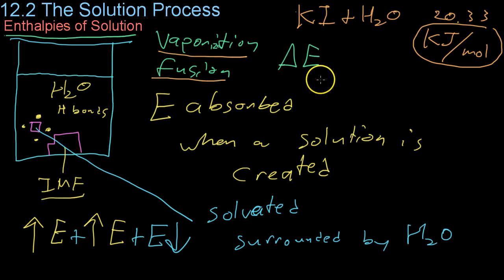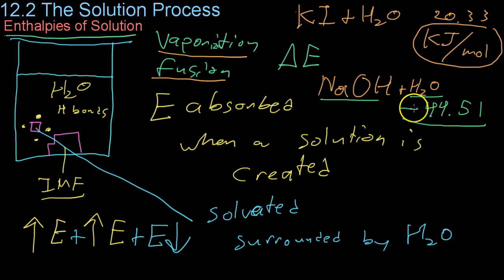However, if for example you were to put sodium hydroxide into a solution of water, you would get a negative enthalpy of solution, that is negative 44.51. And this is because they release energy rather than absorb it when they are combined. And this is because in their separate states they have a higher potential energy than when they are combined.